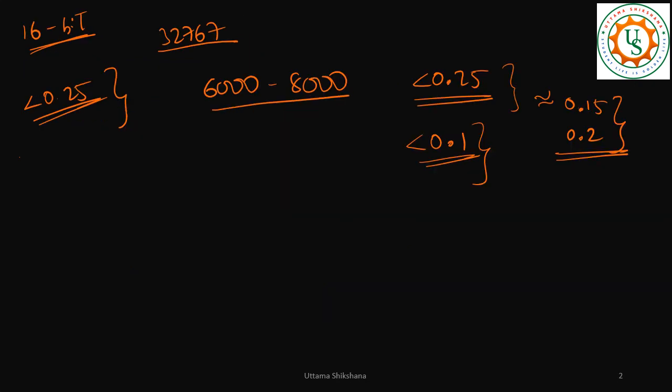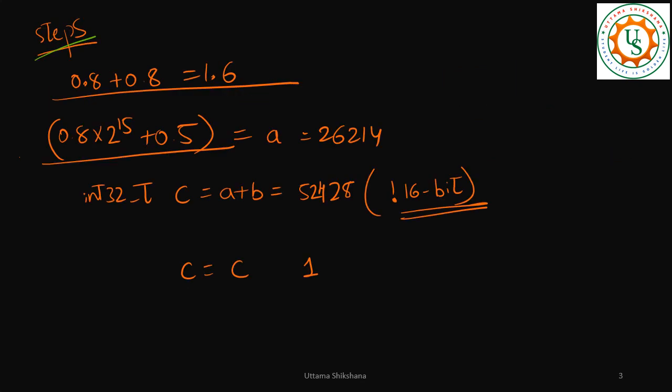Considering these examples and these steps, we can come up with the steps. I've taken an example of 0.5, 0.8, and 0.8 so the result is 1.6. I've taken this so there's a bit growth and we can implement the required logic.